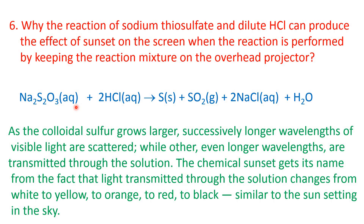Initially, only sodium thiosulfate solution is there, so the transmitted light will be white. But as soon as you add dilute hydrochloric acid, colloidal sulfur starts forming. When the size of the colloidal sulfur is very small, light of shorter wavelength gets scattered and reflected. Slowly, as the size of the colloidal sulfur grows, light of larger wavelength also starts to scatter.